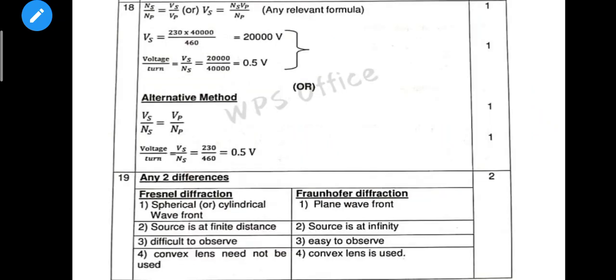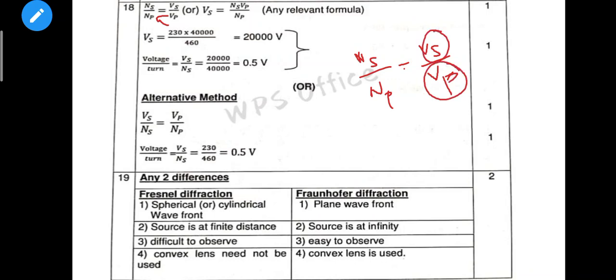Next, numericals. The formula is ns/np = vs/vp. If you cross multiply with vs, ns/np = vs/vp gives the transformer turn ratio. Any relevant formula can be applied. The substitution is 1 mark.